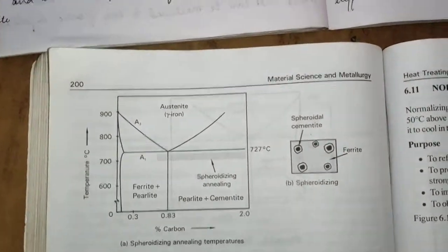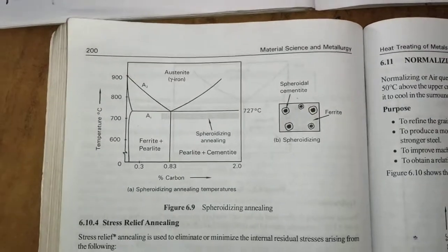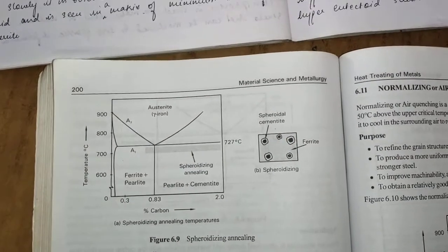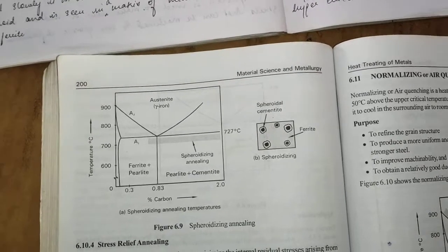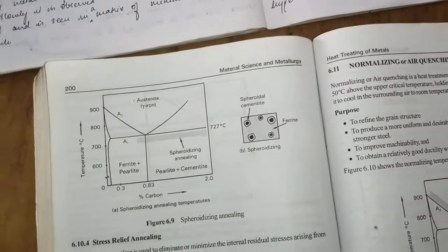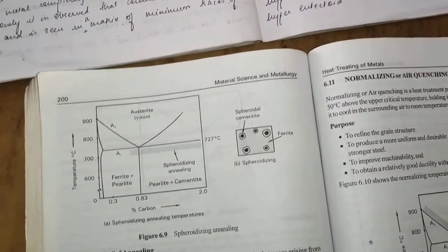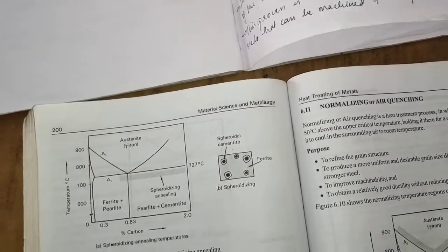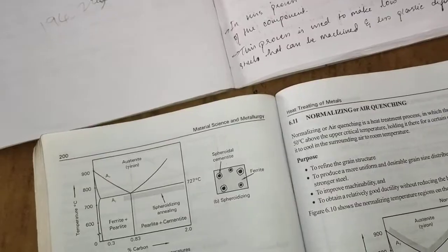Hello everyone, this video is regarding the next type of annealing process, that is spheroidizing. This is a heat treatment process which is the continuation of process annealing. Spheroidizing independently cannot be carried out; only if process annealing treatment is conducted beforehand can spheroidizing be carried out.